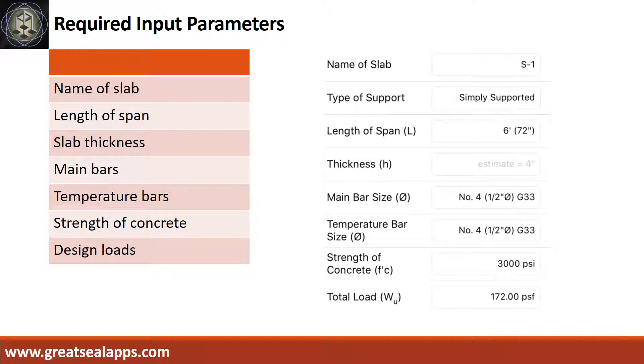Enumerate input parameters required. Name of slab, S1. Type of support, simply supported. Length of span, 6 feet. Slab thickness, 4 inches. Main bars and temperature bars, ½ inch diameter at grade 33. Strength of concrete, 3000 PSI. And total load, 172 PSF.